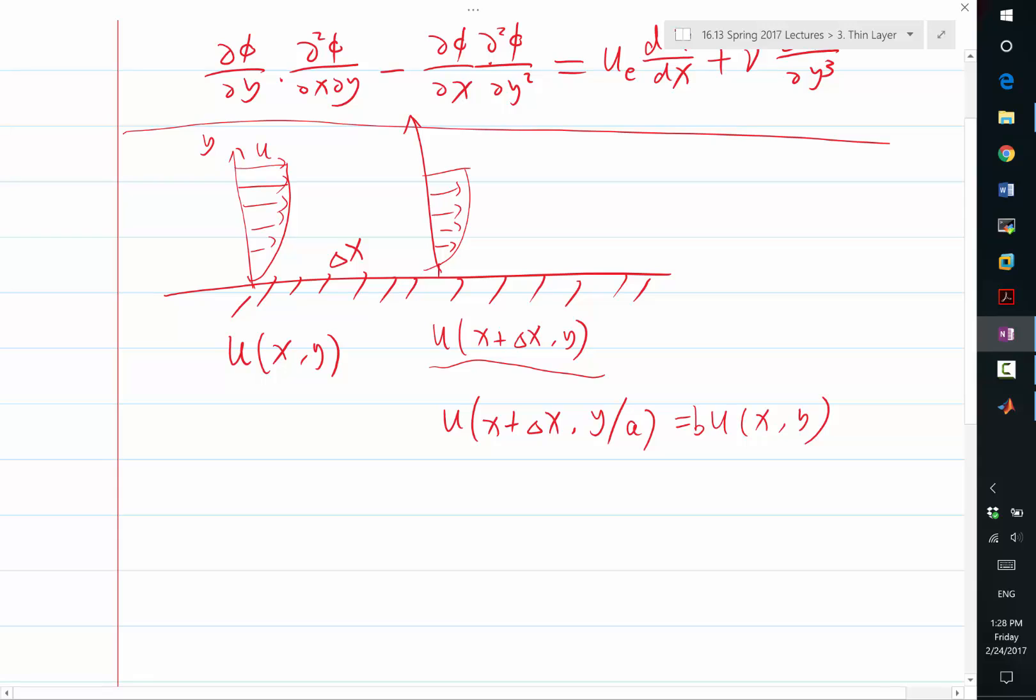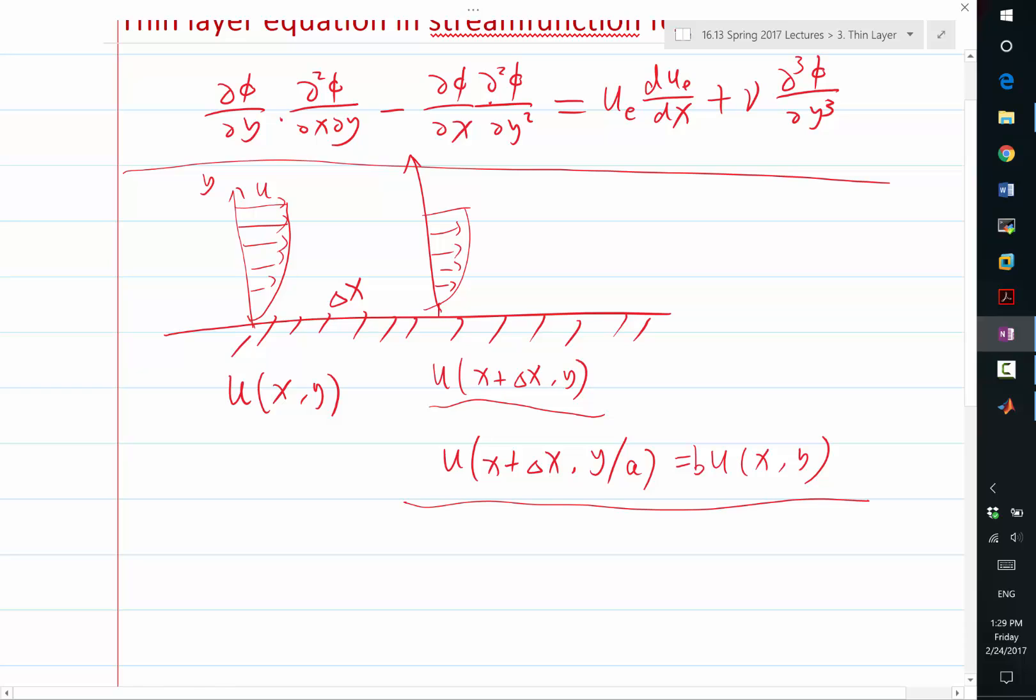So these are the two things you can impose to say I have a self-similar solution. Now, let's say you have a constraint like that. I'm trying to find solutions where there exist such a and b, that for every delta x,